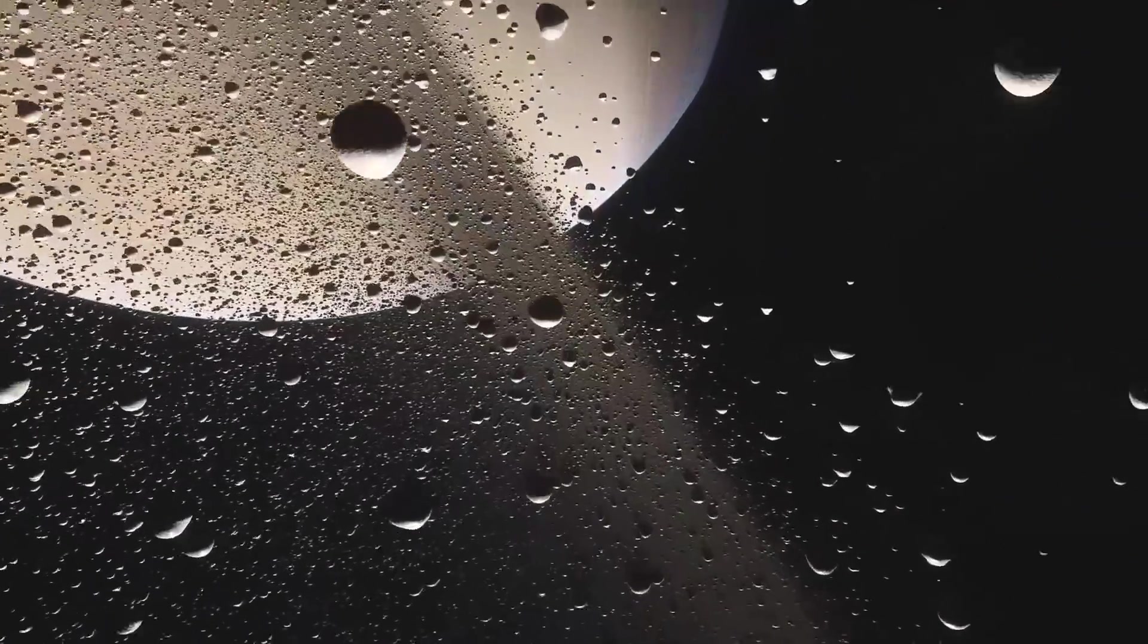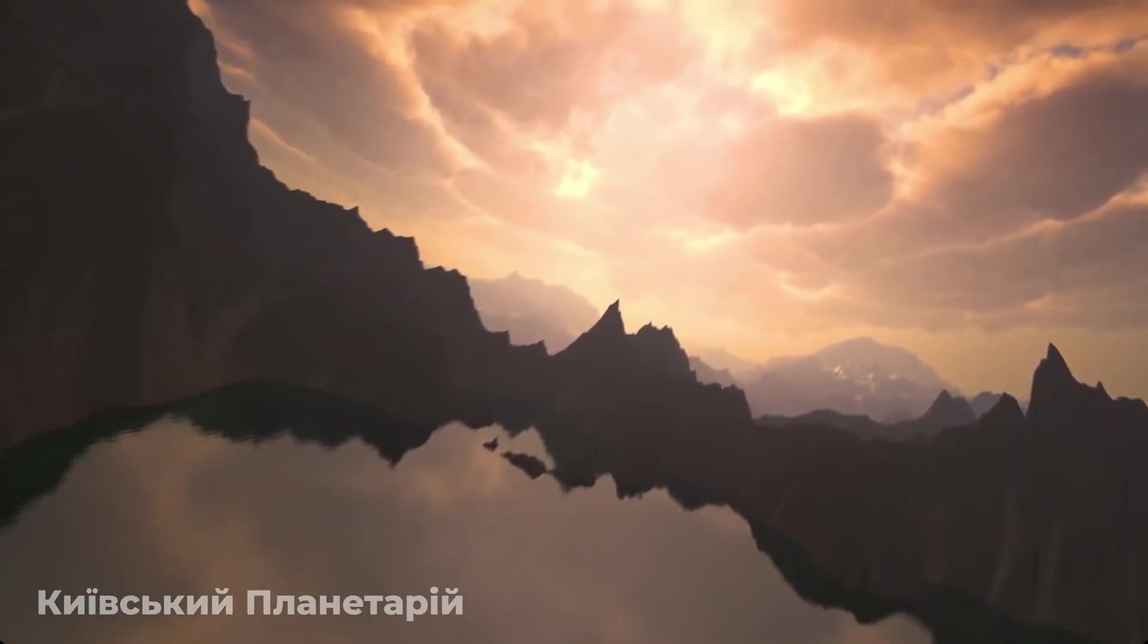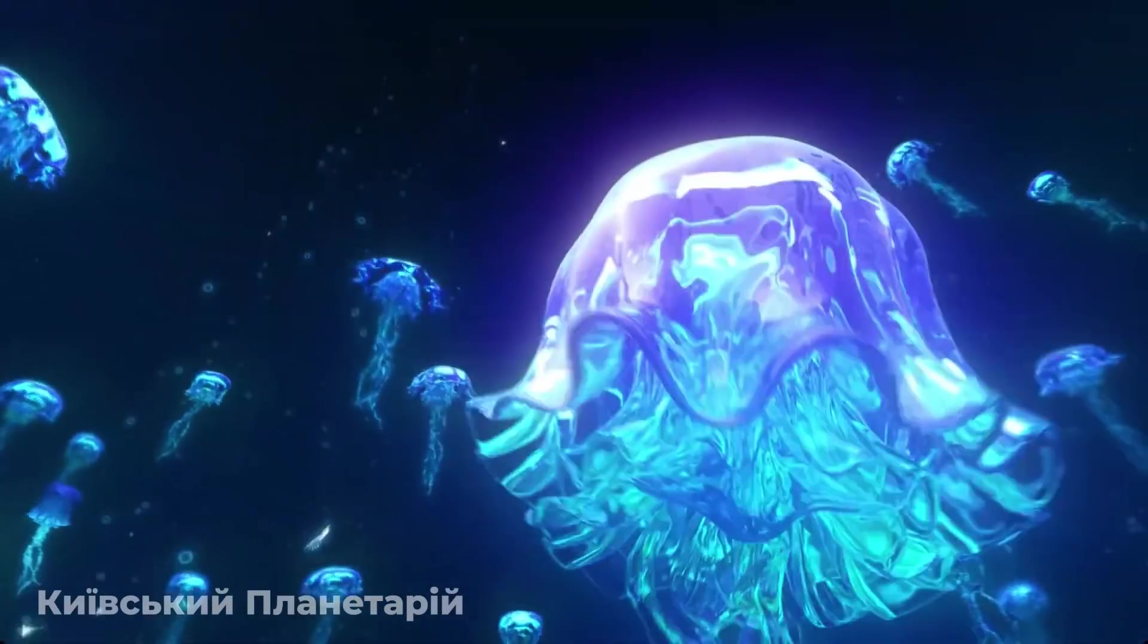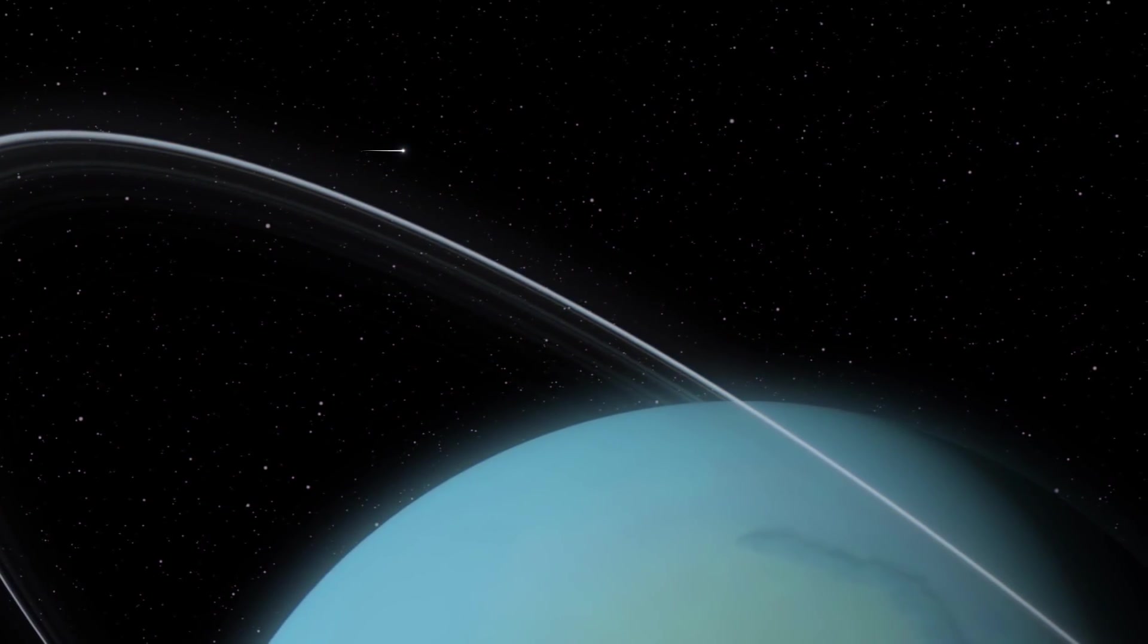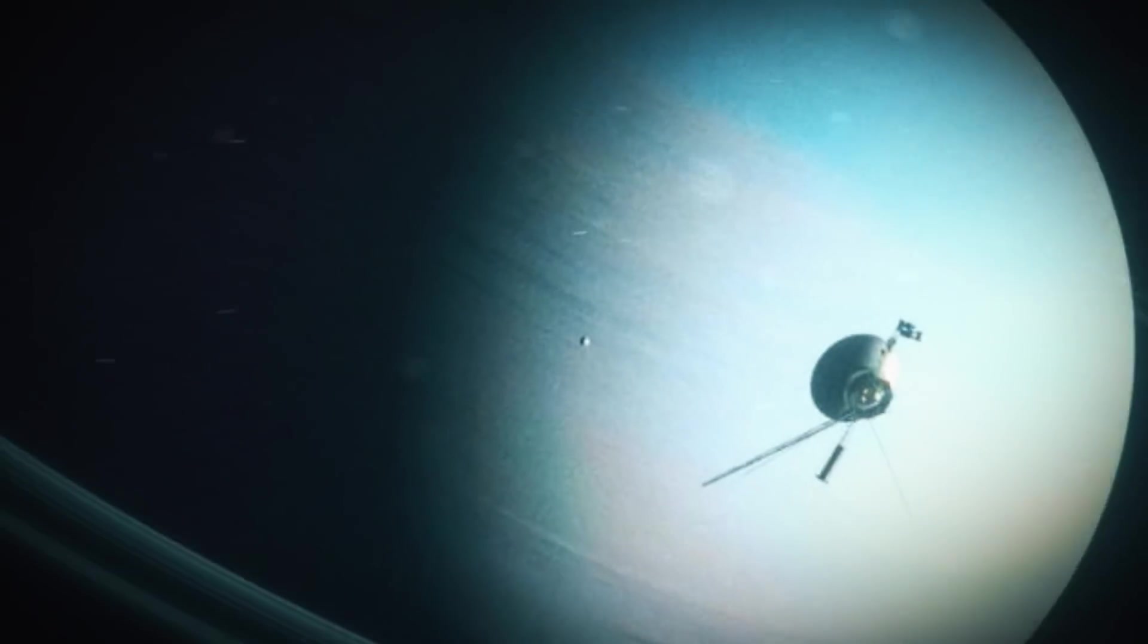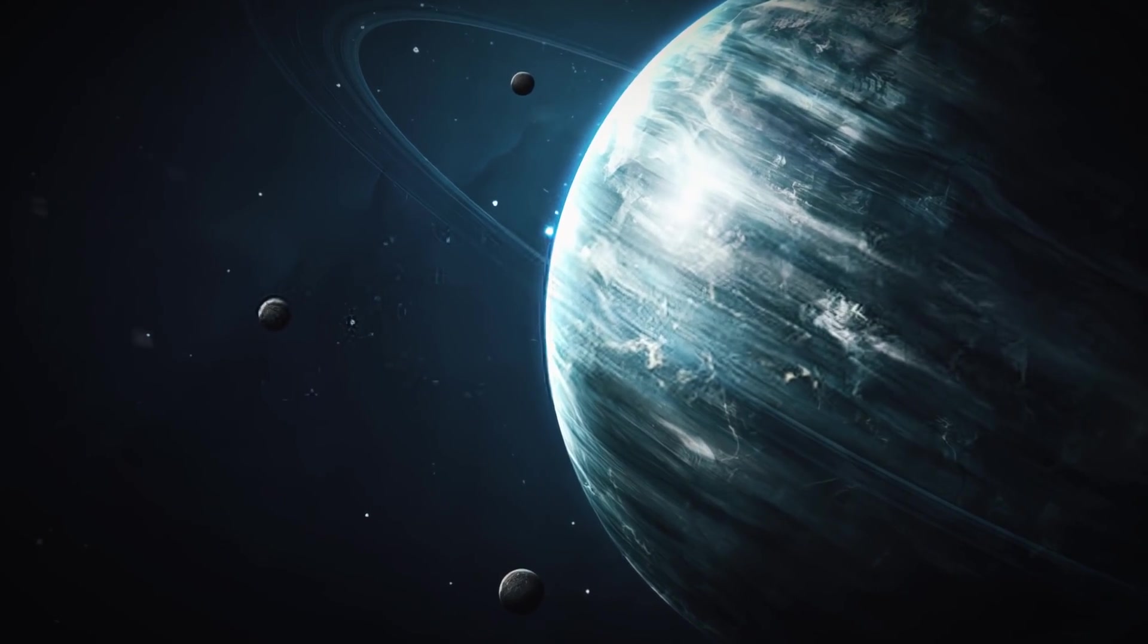Moons are not just satellite rocks floating around planets, they are capable of some great and powerful things, such as life. In 1986, Voyager cruised past Uranus and snapped the first pictures of that gas planet and also uncovered 10 new moons.